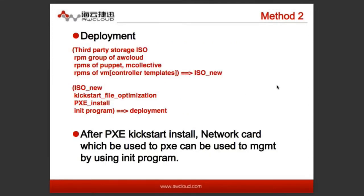Method Two: Deployment. First, produce the ISO new — it includes the third-party storage ISO, which can be SmartX. The next is the RPM group of AdapCloud. The third is RPMs of Puppet and mcollective. The last is the RPMs of VM — these are the controller templates. ISO new and kickstart file optimization, PXE install, and init program can be deployed. After the PXE kickstart install, the network card used for PXE can be used for management by using the init program.